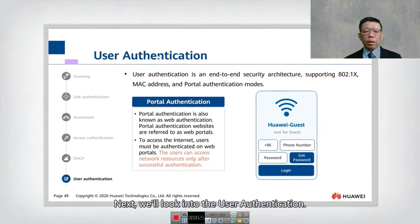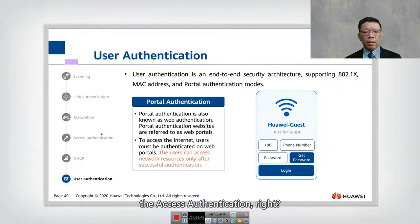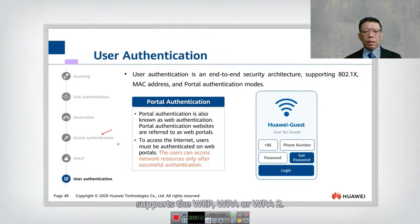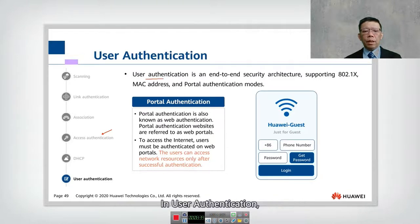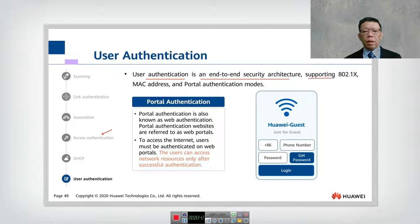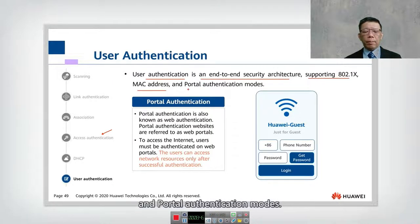Next is user authentication, which is different from access authentication. Access authentication is where the station supports WEP, WPA, or WPA2. User authentication is an end-to-end security architecture. It can support 802.1X, MAC address authentication, and portal authentication modes.